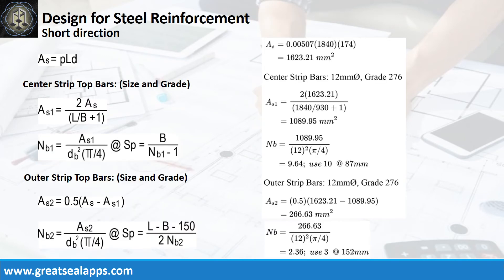Continue at short direction. Given Rho equals 0.00507, L equals 1840mm, and D equals 174mm, the area of steel for short direction bars is 1623.21 mm squared.